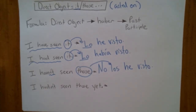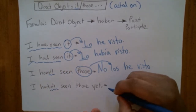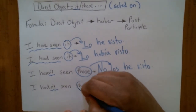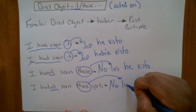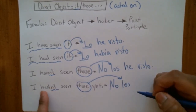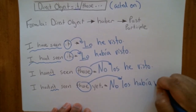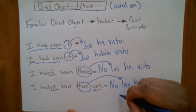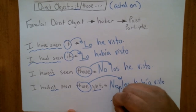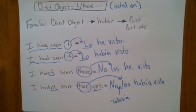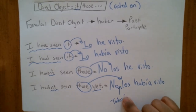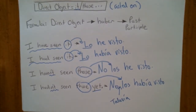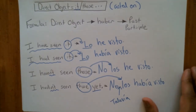One more example with yet. 'I hadn't seen those yet' — past perfect, so no todavía comes first, then the direct object los, then había visto: no todavía los había visto. Remember — your yet goes right after your no in a not-yet statement. So the order in a negative statement with yet is: no → todavía → direct object pronoun → haber (conjugated) → past participle.